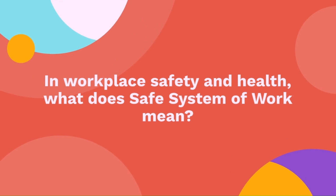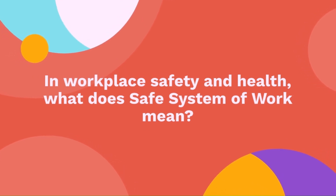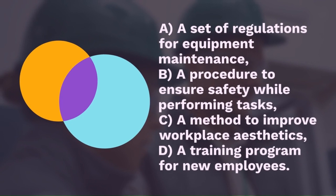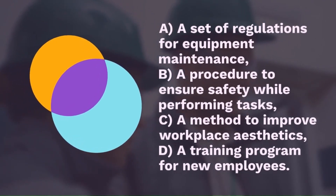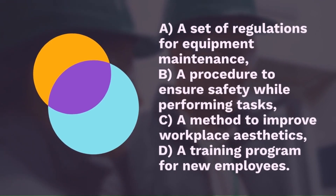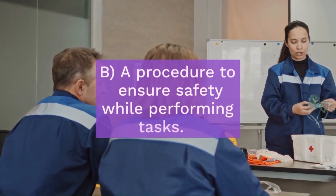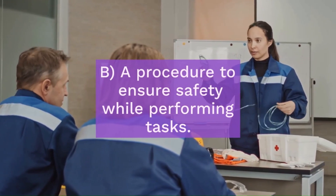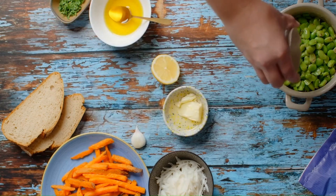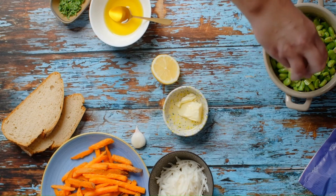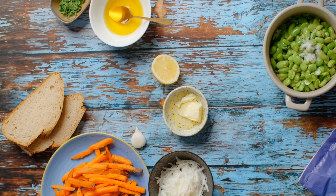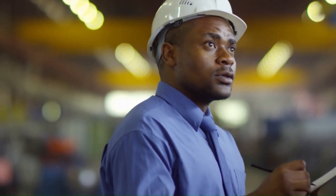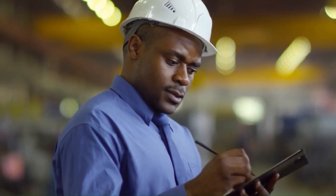Question 7: In WSH, what does 'safe system of work' mean? The options are: a set of regulations for equipment maintenance, a procedure to ensure safety while performing tasks, a method to improve workplace aesthetics, or a training program for new employees. The answer is a procedure to ensure safety while performing tasks. A safe system of work is like following a recipe — you need to do things in a certain way to get the safest result. It ensures every task is done without compromising safety.